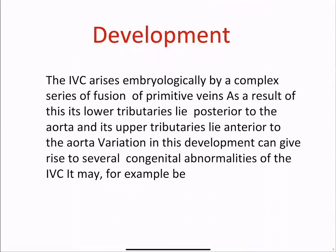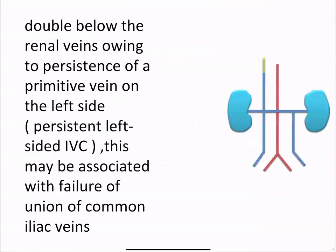Development: the IVC arises embryologically by a complex series of fusions of primitive veins. As a result, its lower tributaries lie posterior to the aorta and its upper tributaries lie anterior to the aorta. Variation in this development can give rise to several congenital abnormalities of the IVC — for example, duplication below the level of the renal vein owing to persistence of a primitive vein on the left side, resulting in a persistent left-sided IVC, which may be associated with failure of union of the iliolumbar vein.